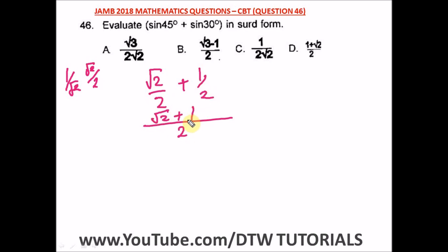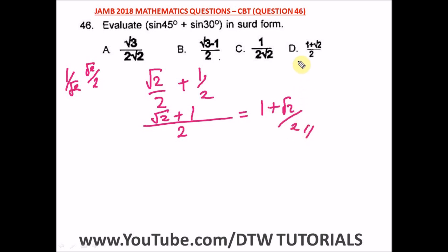Two into two is one times root two, which is still root two; plus two into two is one times one, which is one. So we have one plus root two over two. This is our answer, and the correct option is option D.